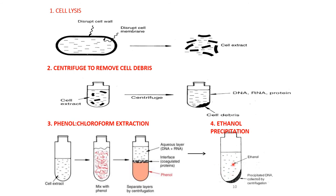The supernatant is taken and ethanol is added to precipitate the DNA. RNase A or RNase H is added to remove the RNA. The sample is then precipitated with ethanol, butanol, or isopropanol. Desalting of the DNA is done using 70% alcohol, after which it is centrifuged, air dried, and stored at minus 20 degrees.